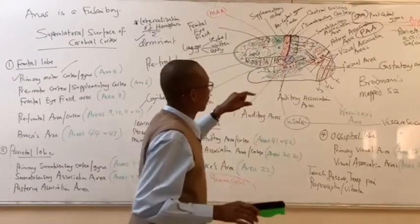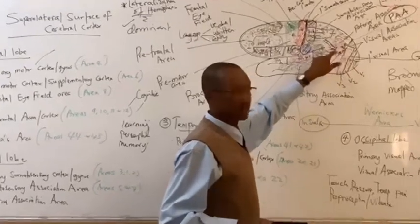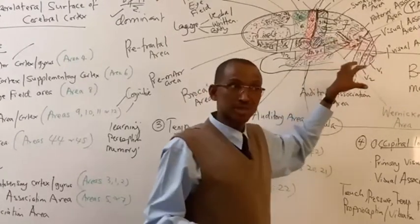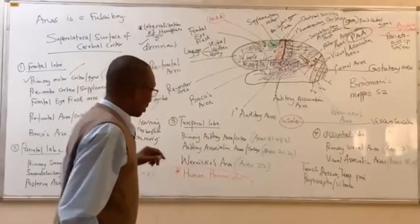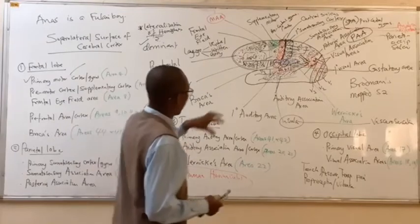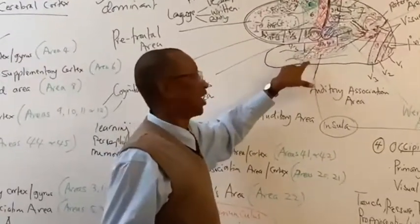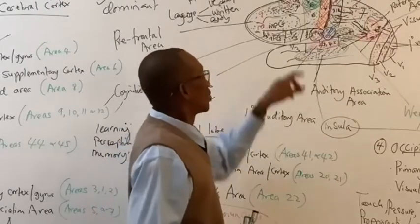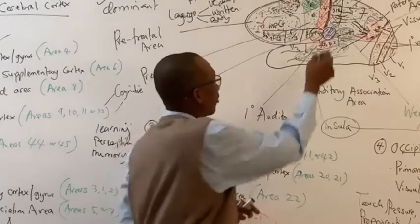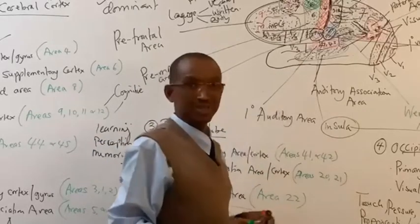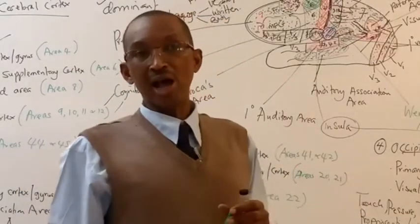Now we have seen the occipital cortex and its association with the posterior association area. What is left for us is to discuss the temporal cortex or the temporal lobe. On the temporal lobe, we have the superior temporal gyrus, middle temporal gyrus, and inferior temporal gyrus. In the superior temporal gyrus, there are important areas — area number 41 and 42 of the Brodmann classification — and that is what we call the primary auditory area or auditory cortex.